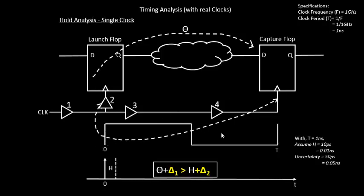In setup analysis, this edge goes to the launch flop and this edge goes to the capture flop, so the amount of uncertainty is even more. In the hold case, since it's the same edge, things are simpler and the uncertainty can be kept as a low value.